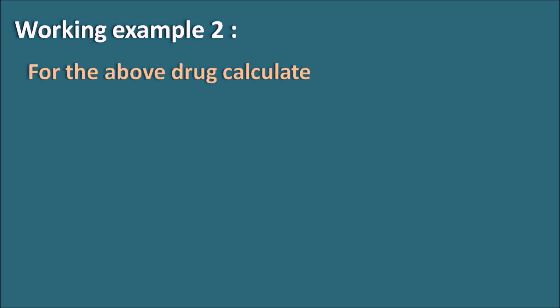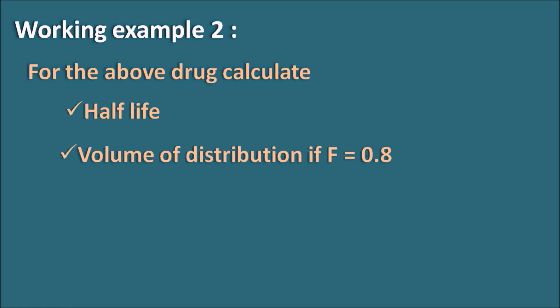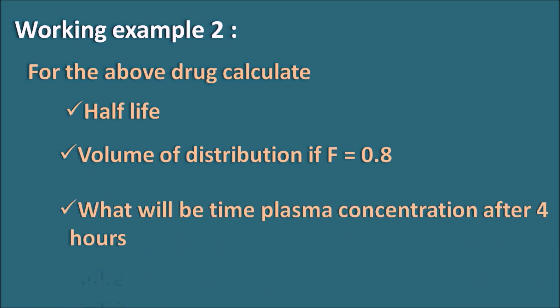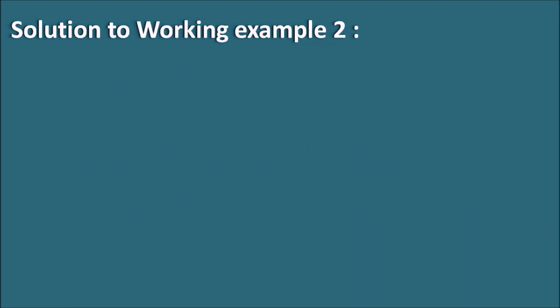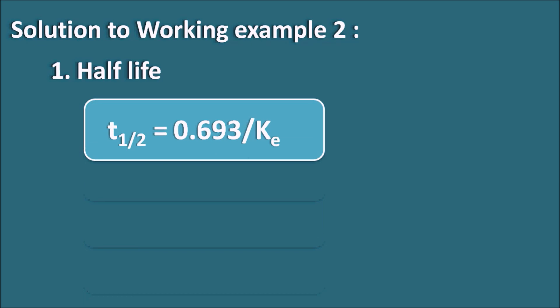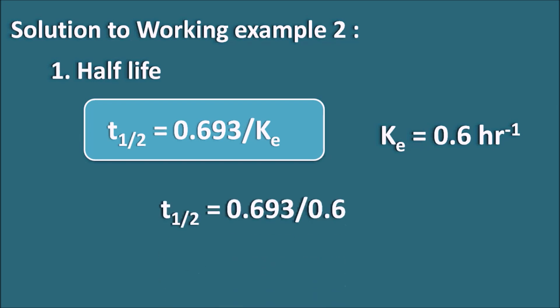Working Example 2: From the above drug, calculate half-life, volume of distribution (F equals 0.8), and plasma concentration after 4 hours. Half-life is given by T-half equals 0.693 divided by Ke. With Ke equals 0.6 per hour, T-half equals 0.693/0.6 equals 1.15 hours. The half-life of the drug is 1.15 hours.